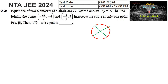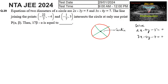The point of intersection of the two diameters will be the center. So we need to find the point of intersection of the two lines. Let us solve: 2x minus 3y minus 5 equals 0 and 3x minus 4y minus 7 equals 0 to get the center.